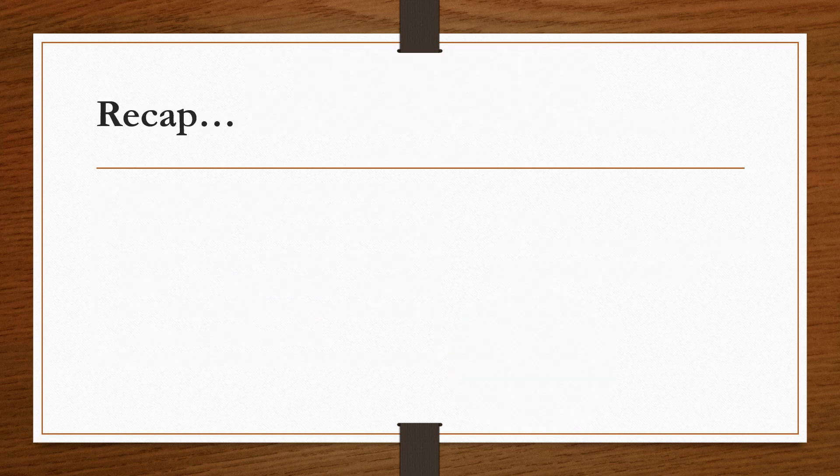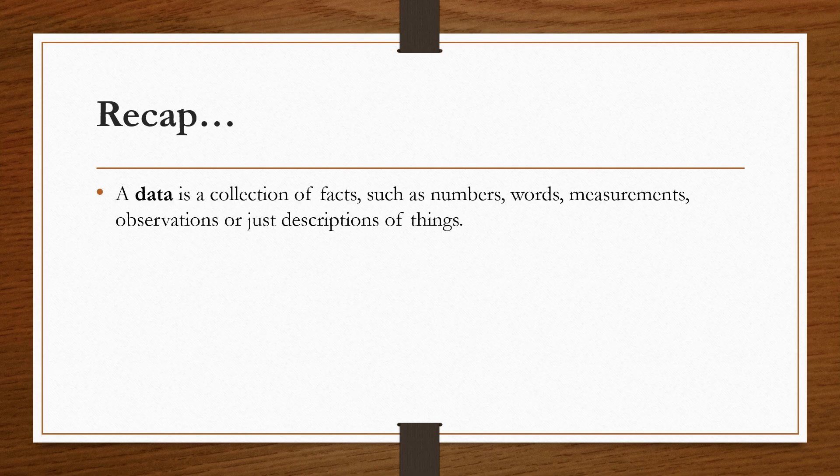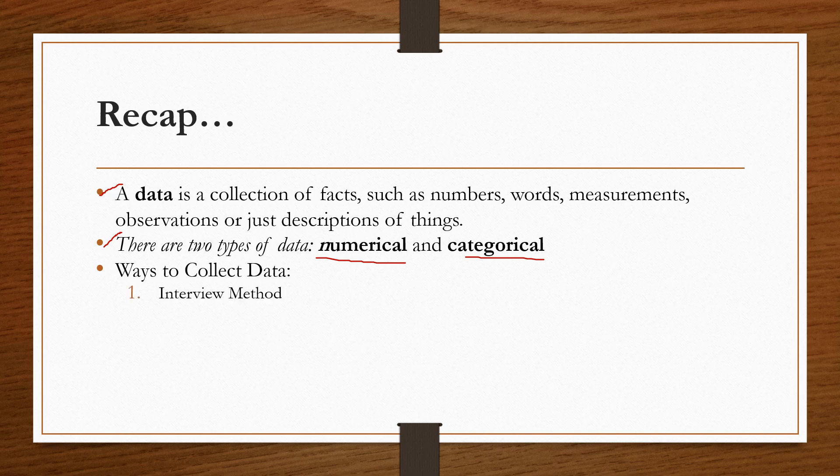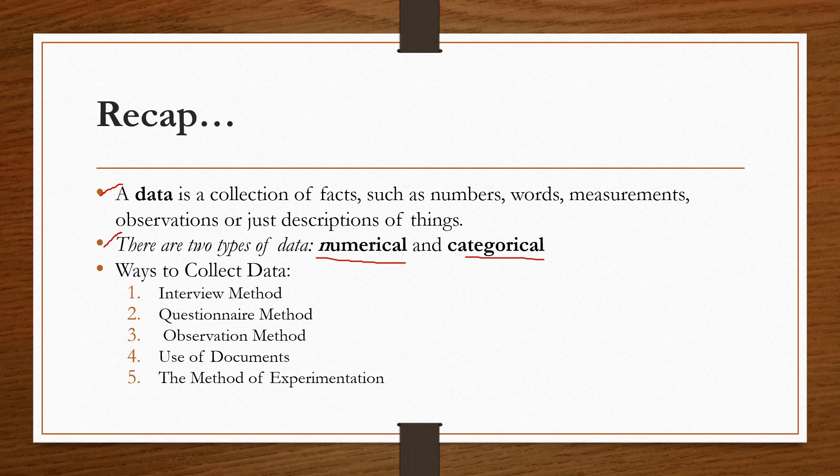So those are some of the statistical ways or methods for us to collect data. Again, let us have a recap. A data is a collection of facts such as numbers, words, measurements, observations, or just descriptions of things. Another thing we learned is the two types of data: numerical data and categorical data. Now there are also five ways in which we can collect data: interview method, questionnaire method, observation method, through the use of documents, or through the method of experimentation.